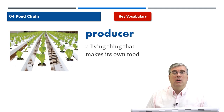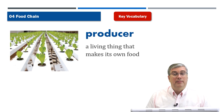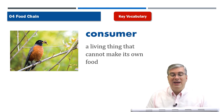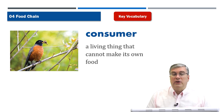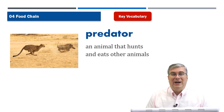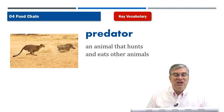We start with vocabulary. 'Producer' is a living thing that makes its own food — it can create food by itself. The opposite of a producer is a 'consumer' — a living thing that cannot make its own food. All animals are consumers; they need to find other things to eat. 'Predator' is an animal that hunts and eats other animals. A cheetah, for example, is a predator — it will hunt and eat other animals like the warthog it's chasing in the picture.